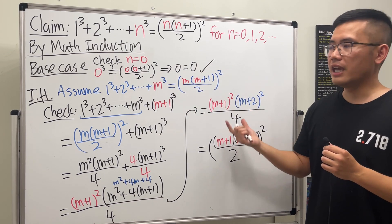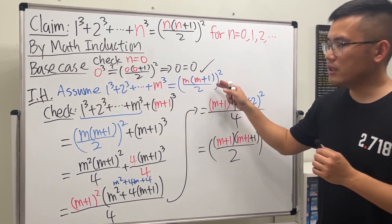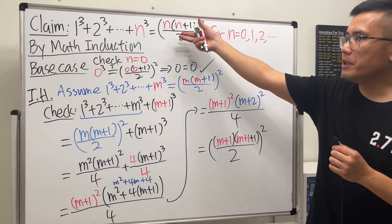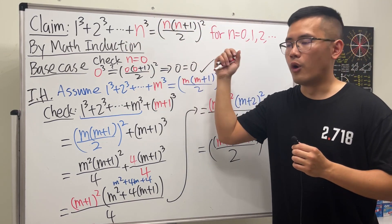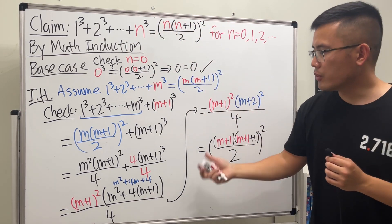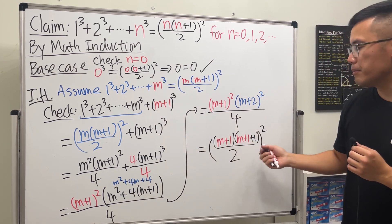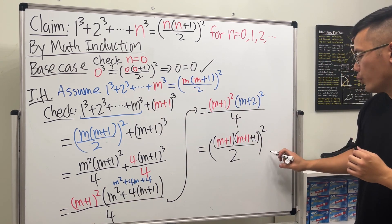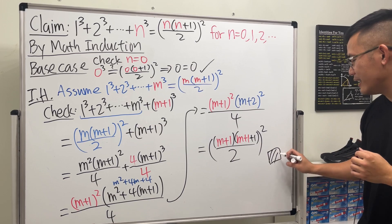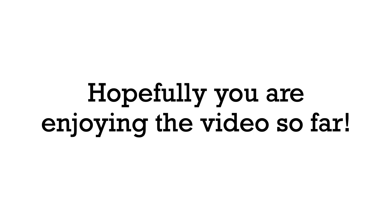This is exactly in this form, and then we have m+1 again. Once we have this assumption, meaning that assuming this formula is true for m, we have shown that it's also true for m+1. Therefore, we are done. We can just draw a box and share it. Hopefully you all enjoyed the video so far.